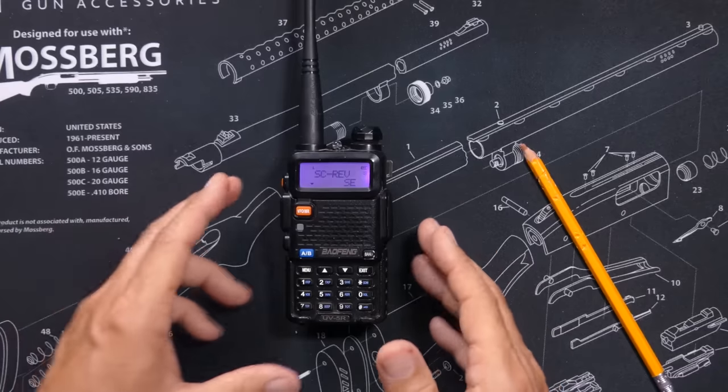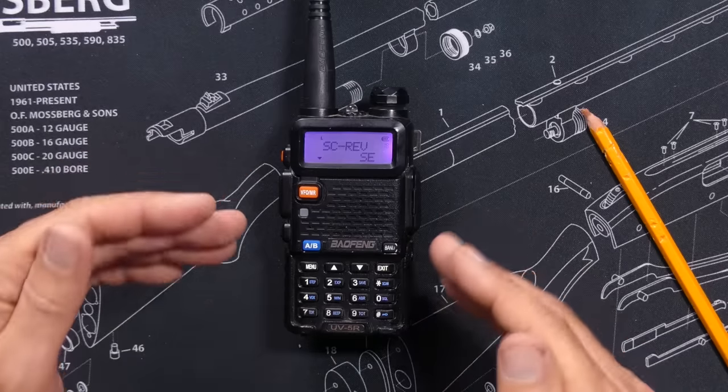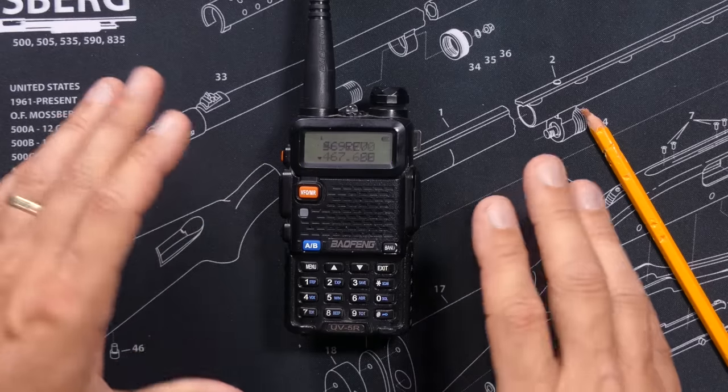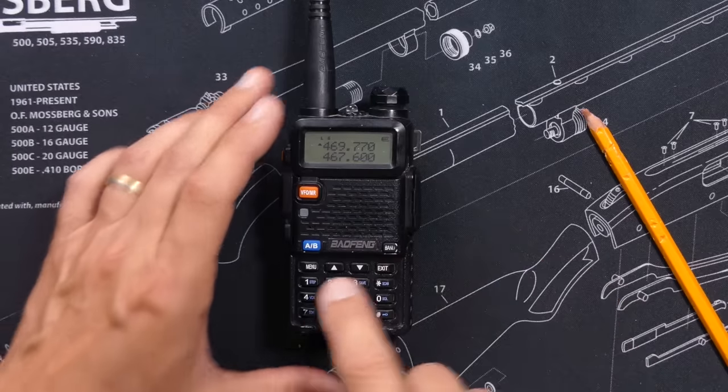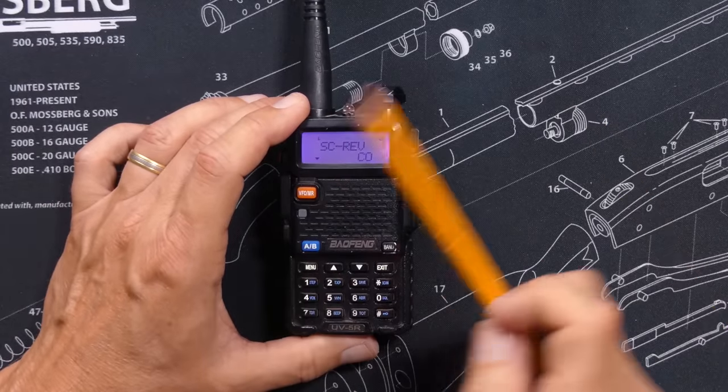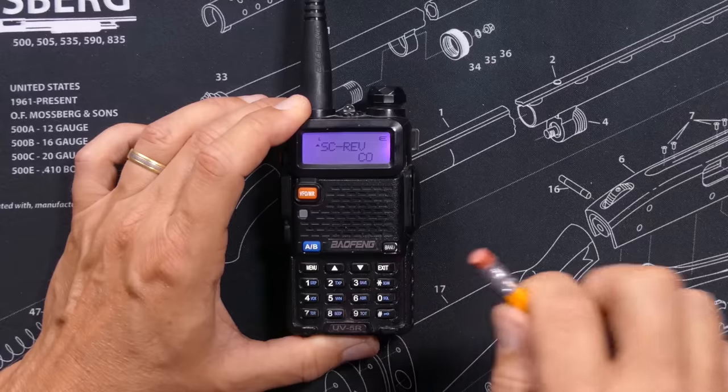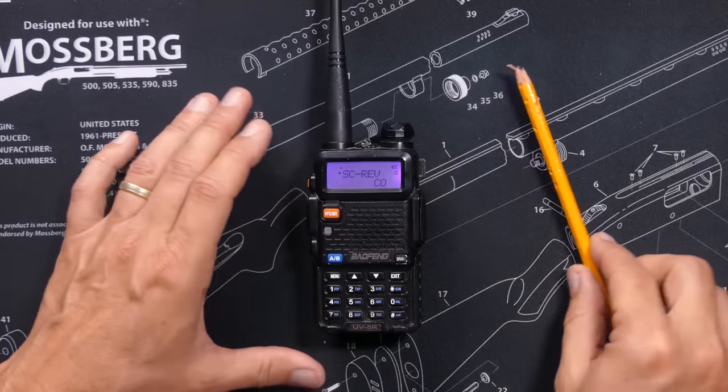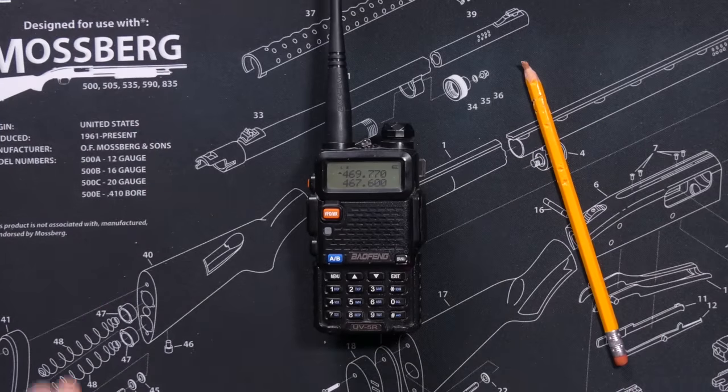SE, short for stupid example, means the radio will stop scanning when it hits something and it will just stay on that frequency, basically ending the scan. I use the CO setting. That means the radio will stop and listen to what it hears and then continue scanning when the signal stops.